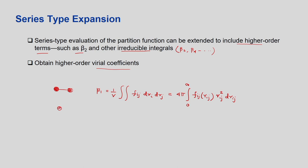Beta_2 is a complicated integral. You cannot separate out the indices because if you take one atom as the origin, the other interatomic distances change. You cannot fix either atom as the origin, so all integrals must be done across all three atoms. A solid line connecting two atoms implies there is an interatomic potential between them. Beta_2 is (1/(2! · V)) times the triple integral of F_12 · F_23 · F_31 dR_1 dR_2 dR_3.